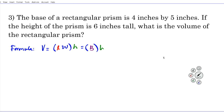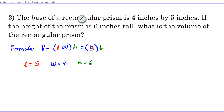We're going to use the first formula here because we're given the length, width, and height. The base is comprised of the length and width. Since multiplication commutes, we can pick either dimension to be the length or the width — the product will always be the same. Let's call the length five inches and the width four inches. The height is six inches tall, so h equals six. Can you visualize what this rectangular prism looks like? Let's make a rough sketch.